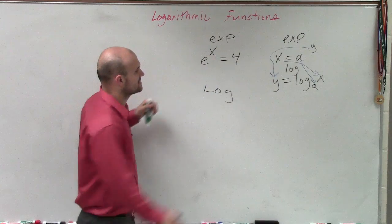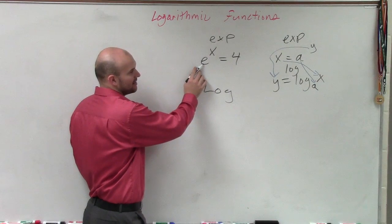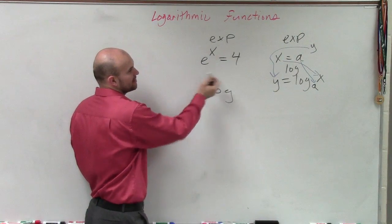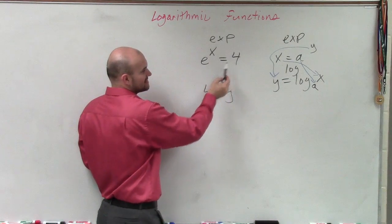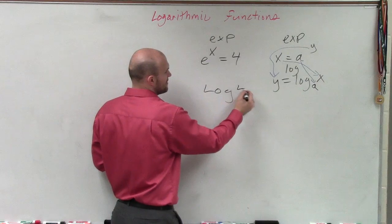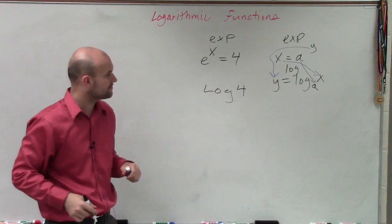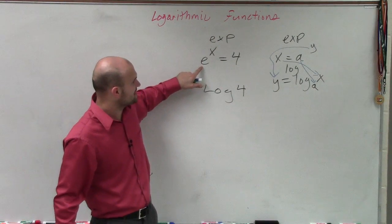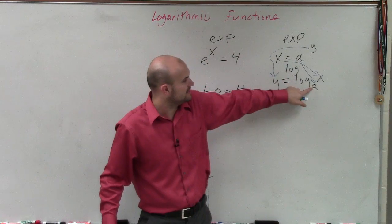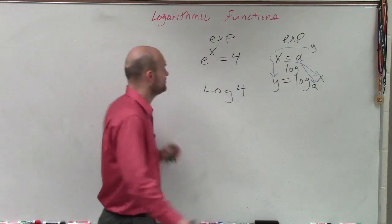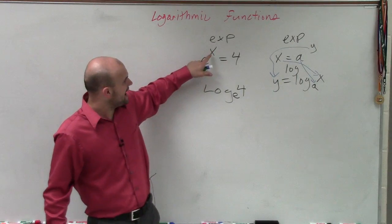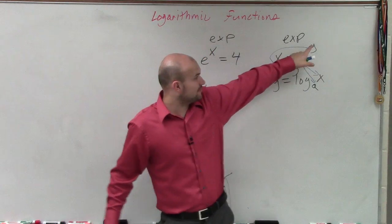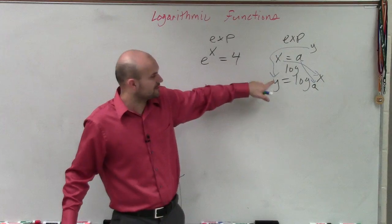So what is my x? My x here is 4, which goes to what I'm evaluating for. My base of my exponent, my a, now becomes the base of my logarithm. So this is now base e. And then my x, which is my exponent, which is that y up there, now that goes to what I'm equaling.